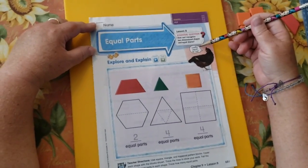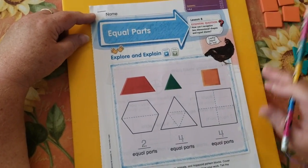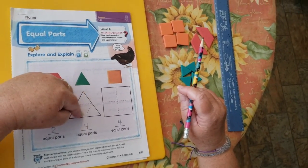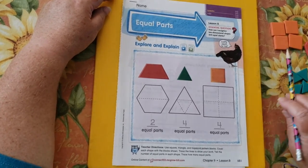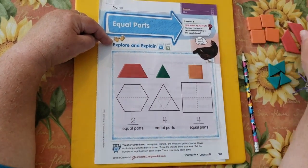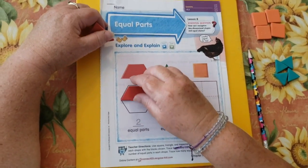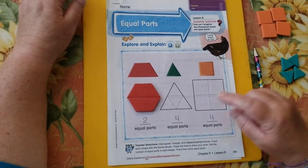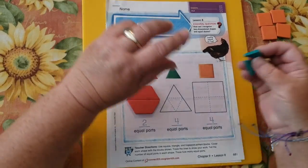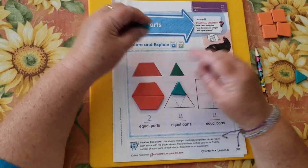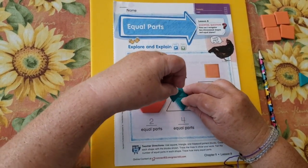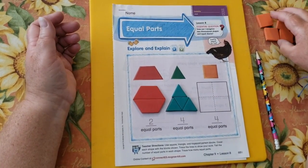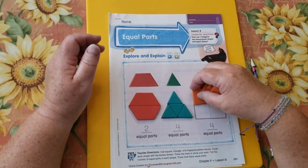So our chicken friend here says, looks equal to me. We're going to use our shapes over here to create the equal shares in each part. So we'll start with the trapezoid. You can see we're building a hexagon. And it makes two equal parts. And for our triangle, we're building a triangle of triangles. And that is four equal parts.